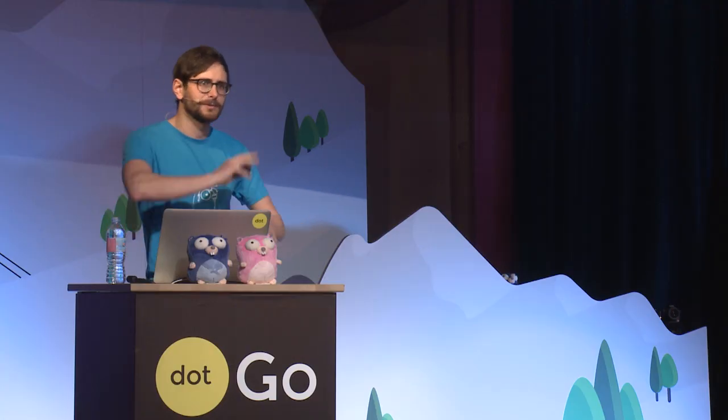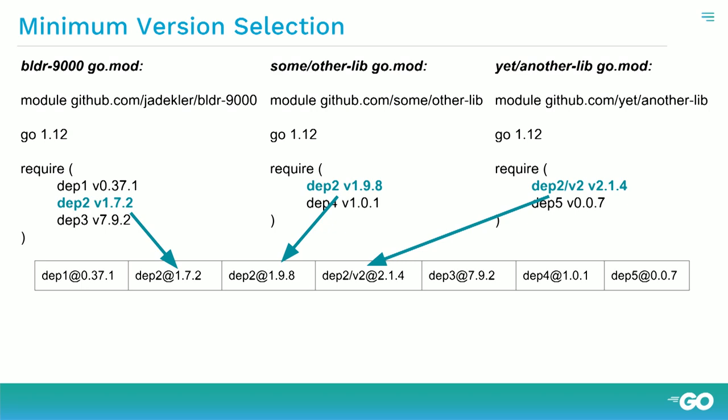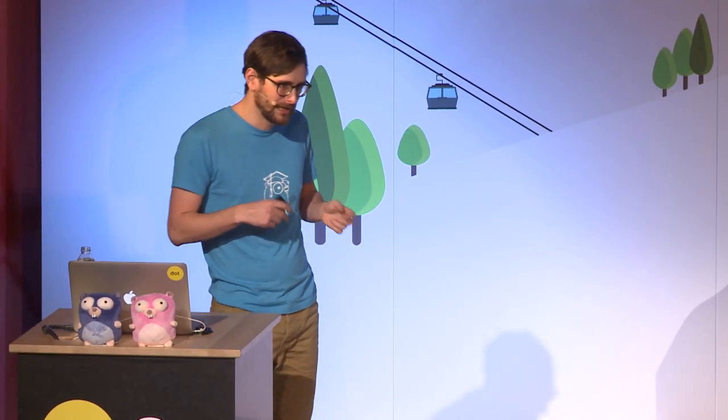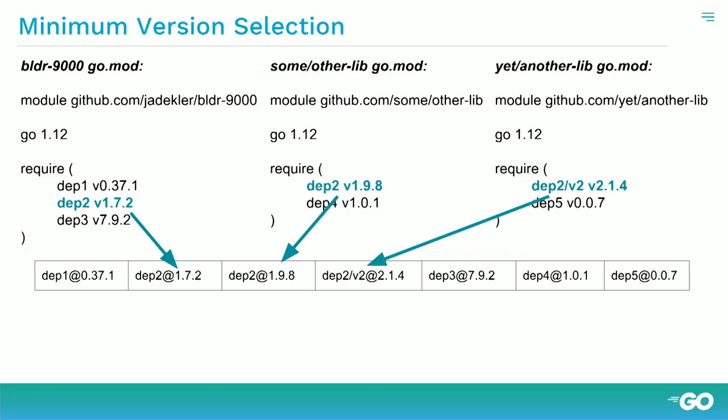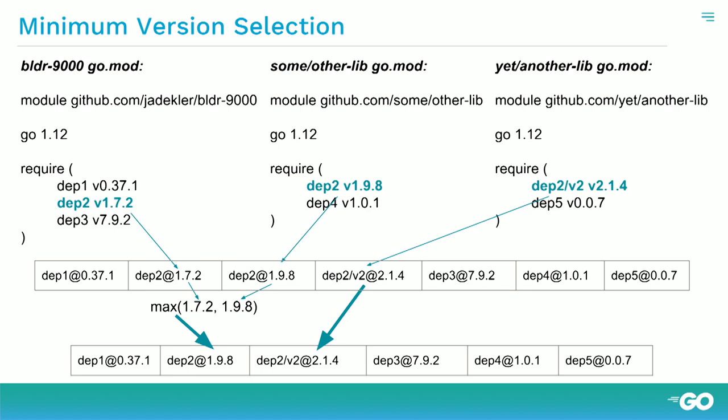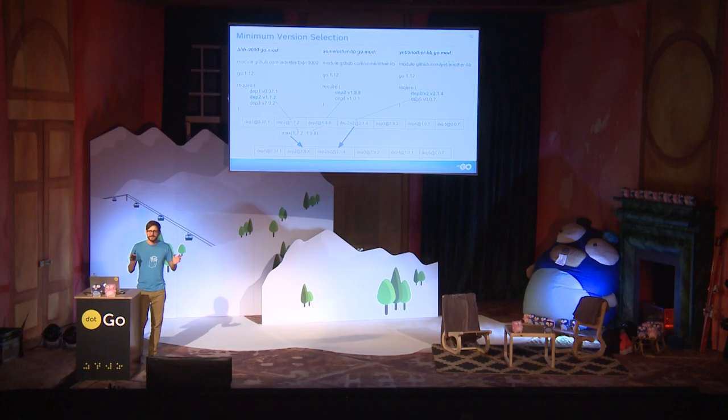The question is: how do we choose the version of depth-two to use? For depth-one, it's obvious — there's only one version, 0.37.1. But depth-two has multiple versions. This is where different package managers do different things. The way MVS works is we build a dependency list and bucket things by major version. You get at least one version for every major version needed. For v1 there are two: 1.7.2 and 1.9.8. For v2 there's just 2.1.4. MVS does a max — the max of 1.7.2 and 1.9.8 is 1.9.8. This piece is crucial for multi-module repositories.